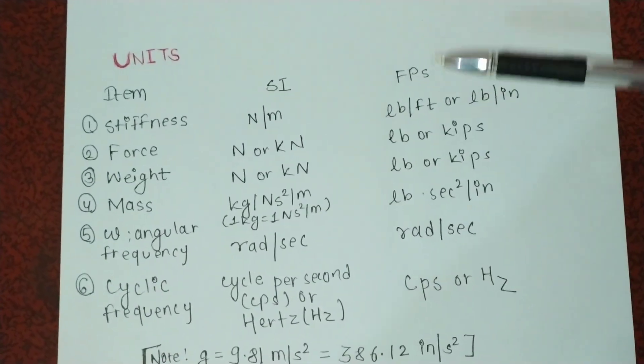If it is in SI unit, we'll be using this unit, and if it is in FPS unit, we'll be using these units. The acceleration due to gravity in SI unit is 9.81 meter per second squared. In FPS unit, it is 386.12 inch per second squared. These are also really important for numericals, so please go through this.